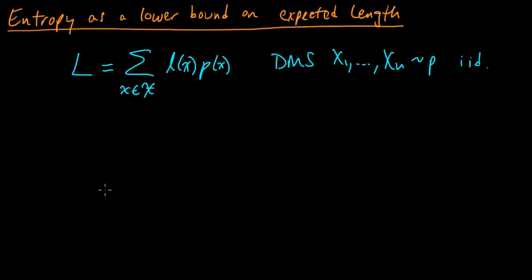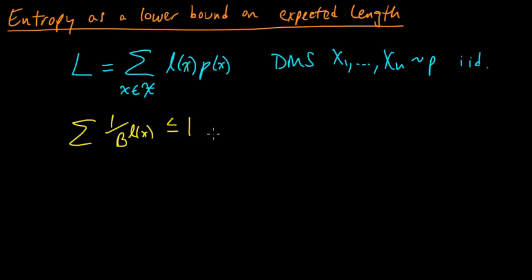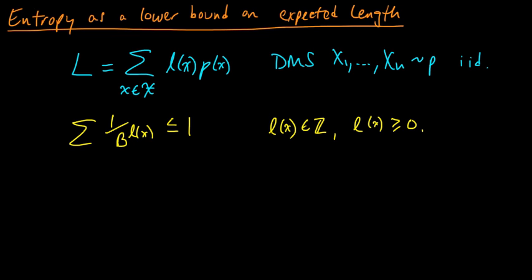That's where the Kraft-McMillan inequality comes in. Kraft-McMillan tells us that as long as the lengths satisfy the sum of 1/b^(l_i) ≤ 1, there exists a uniquely decodable code — in fact a prefix code — with those lengths. McMillan showed that for any uniquely decodable code the lengths satisfy this inequality. So this is a necessary and sufficient condition on the lengths for a uniquely decodable code to exist. The lengths must also be non-negative integers.